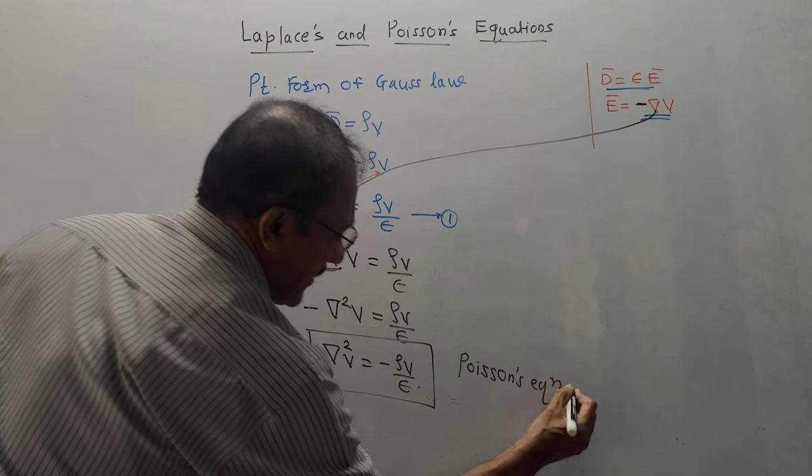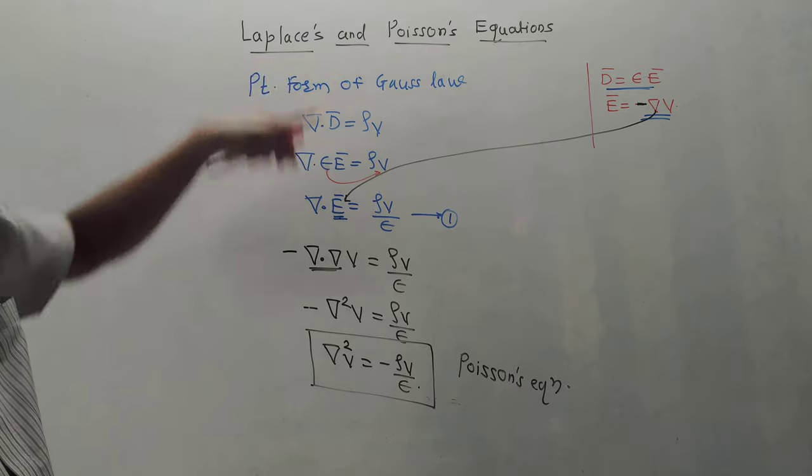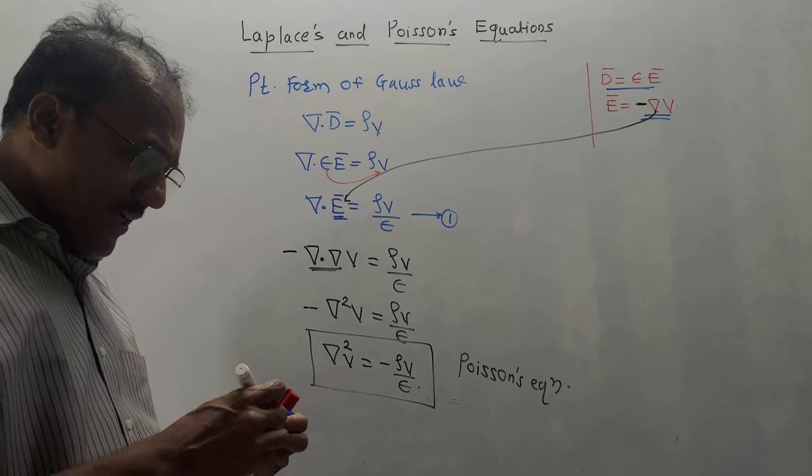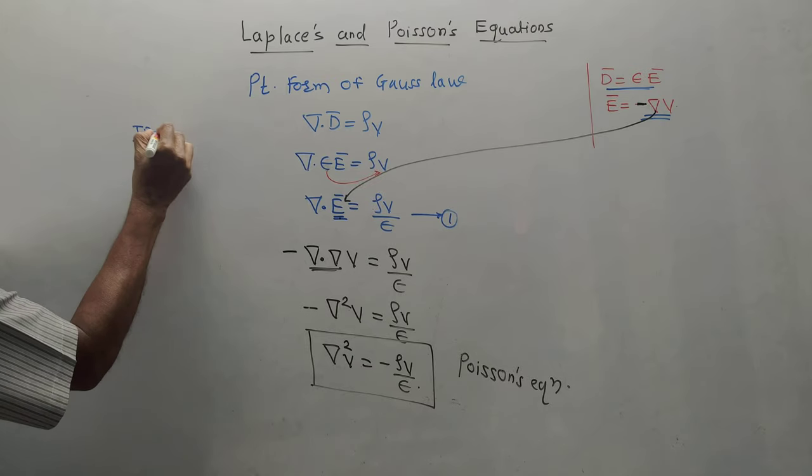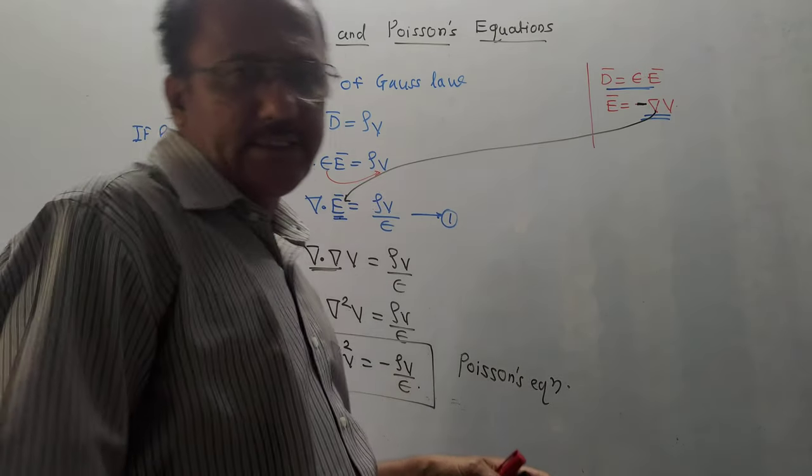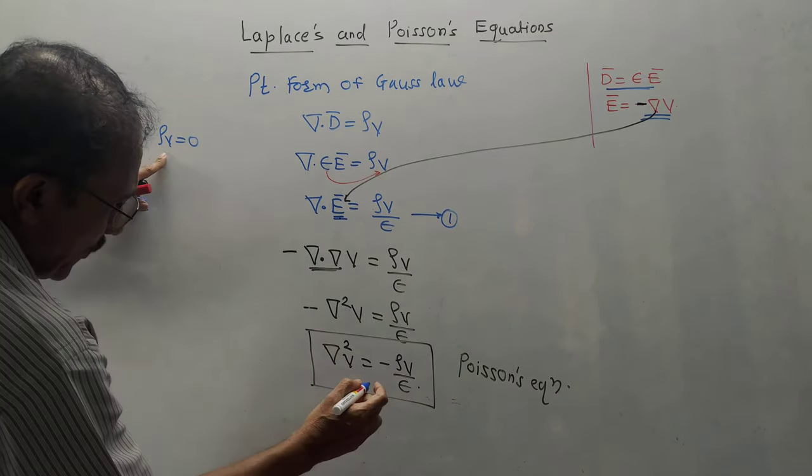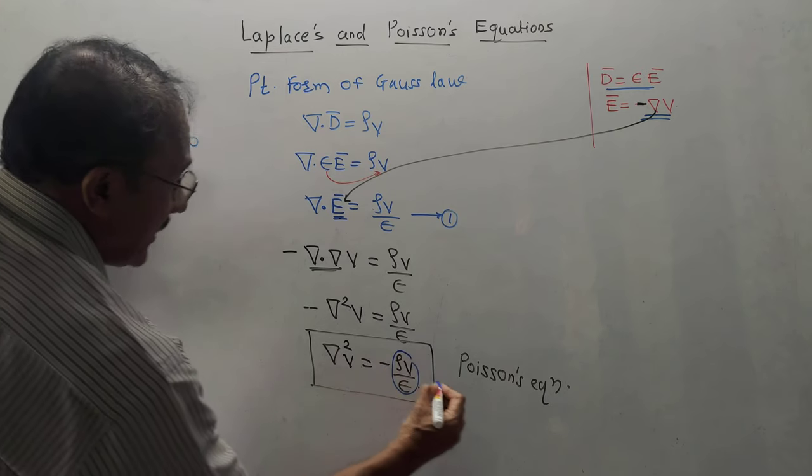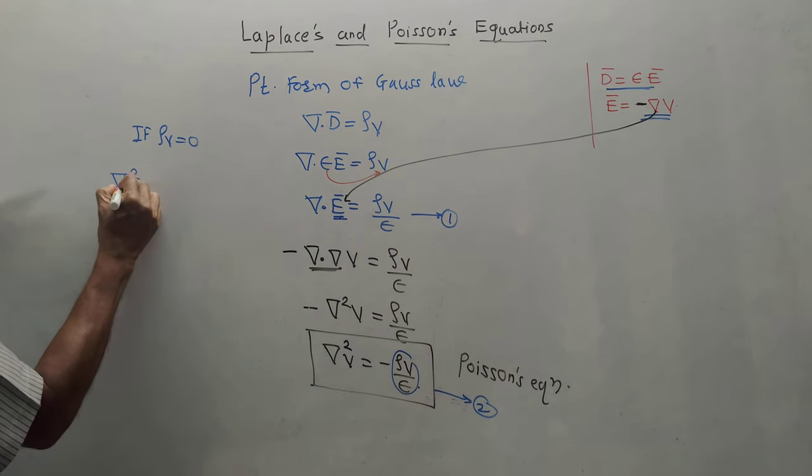For Laplace's equation, if ρV = 0 (meaning there can be line charge density ρL or surface charge density ρS, but volume charge density is zero), then substituting into Poisson's equation gives ∇²V = 0. This is called Laplace's equation.